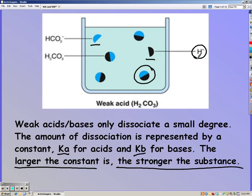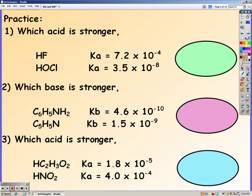Strong acids and bases don't have Ka's or Kb's because we know they break up 100%. And a Ka and Kb only tells us how much of it breaks apart.